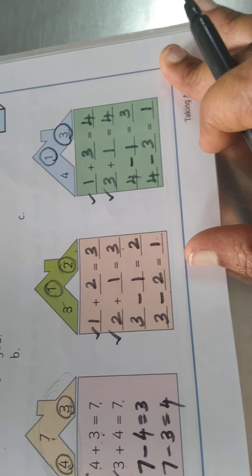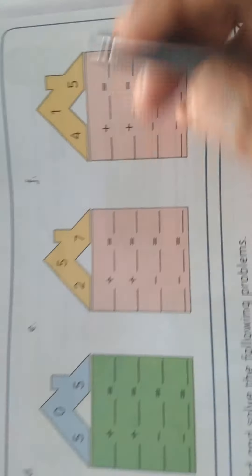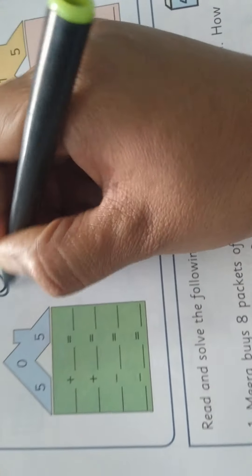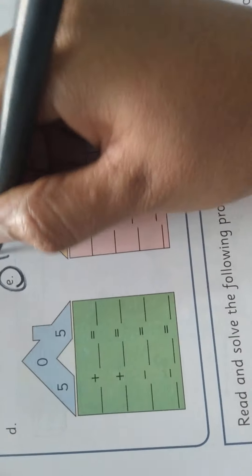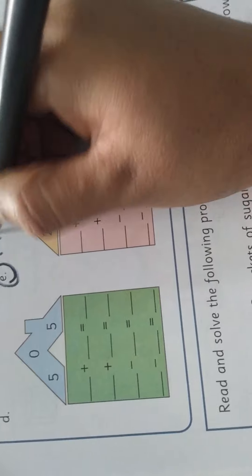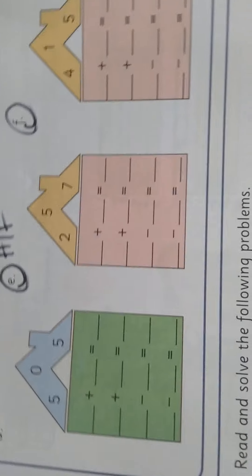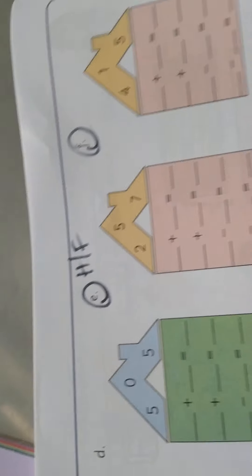Now take the next page. Next page, 3 sums are there. I am going to do D alone; you want to do E and F. E and F is your home fun.